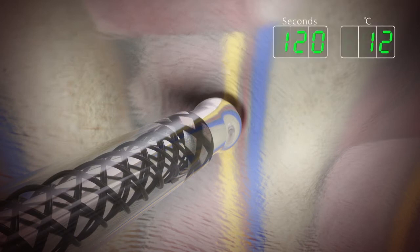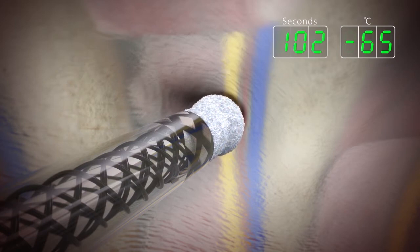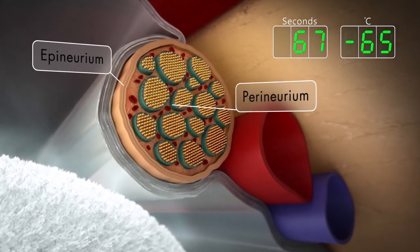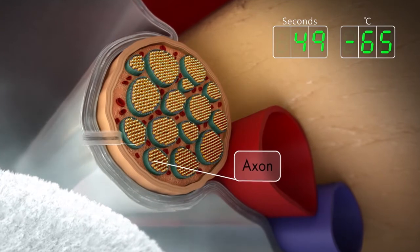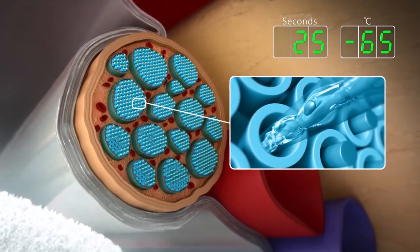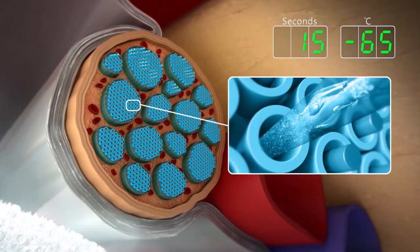Cryo ablations are performed for 120 seconds at roughly negative 65 degrees Celsius. The nerve structure consists of the epineurium, paraneurium, endoneurium, and axon. Once frozen, the tubule structures of the nerve remain intact while the axon degenerates from the site of freezing distally. This is called Wallerian degeneration.